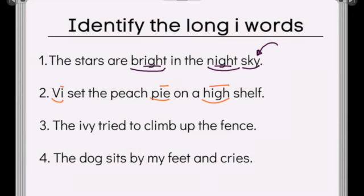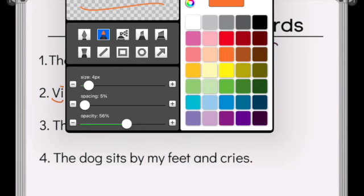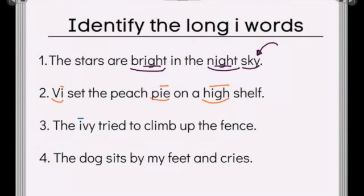All right, number three, the ivy tried to climb up the fence. Ivy likes to climb everywhere. Did you hear that I on ivy? So we've got ivy, tried has the I just like in pi. We've got climb with the I by itself, just like in child that we practiced. And in number four, we find cries. My dog sits by my feet and cries with an I-E.